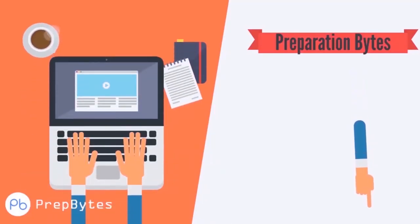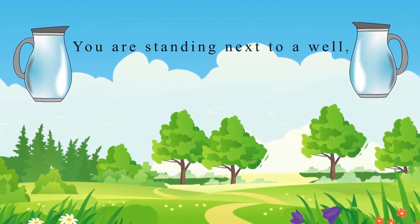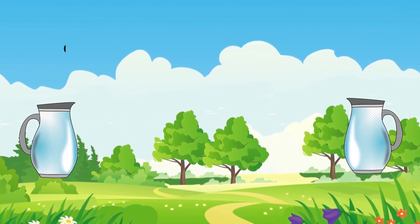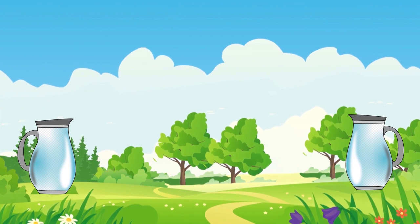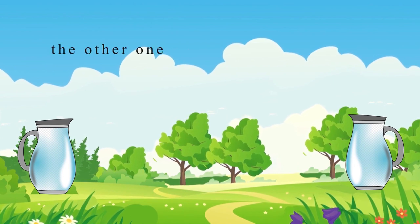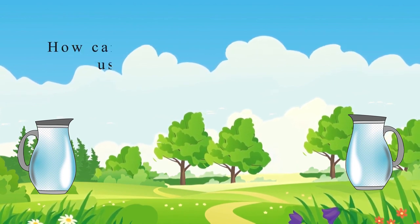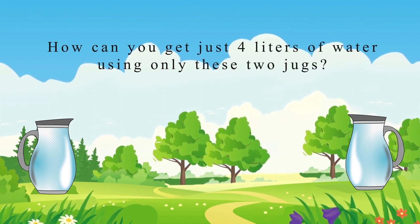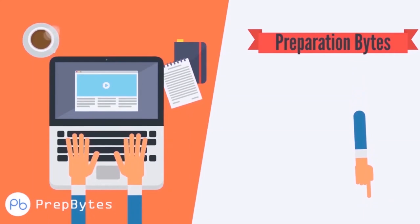You are standing next to a well and you have two jugs — one jug has a content of three liters and the other has a content of five liters. How can you get just four liters of water using only these two jugs?